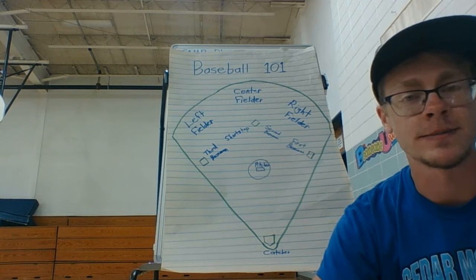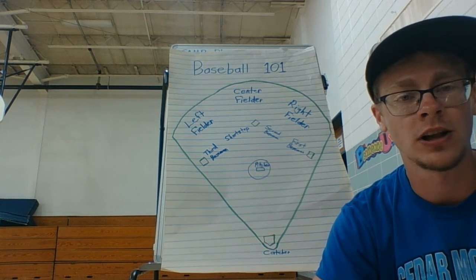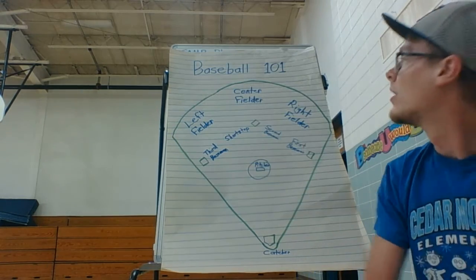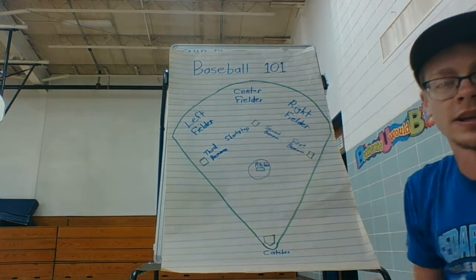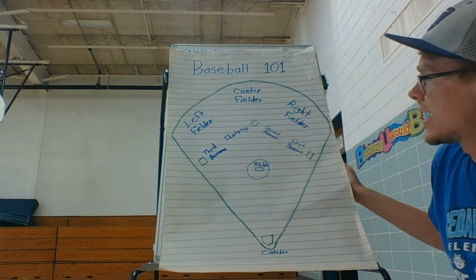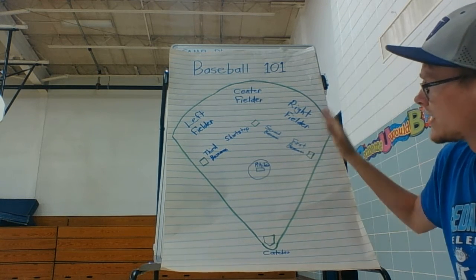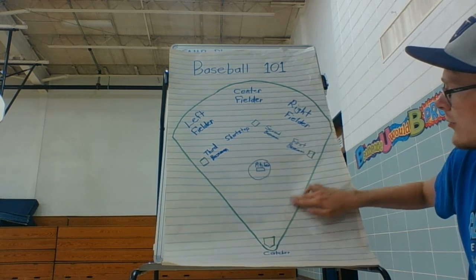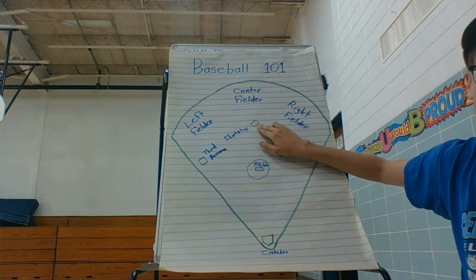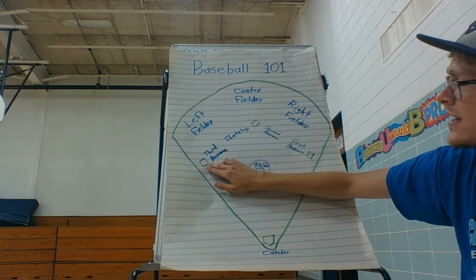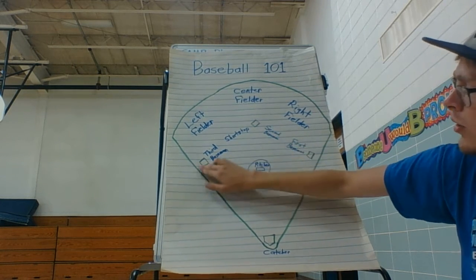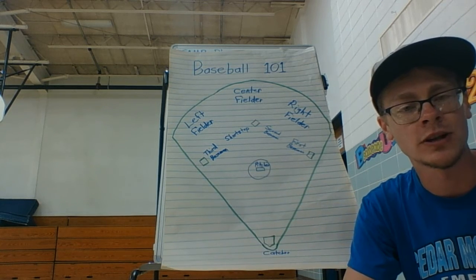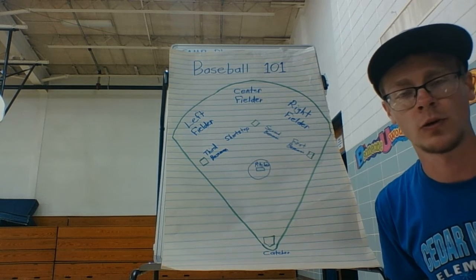What I'm going to do first is just explain the positions of baseball and softball, just in case you guys don't know the correct terms. This is what the baseball diamond would look like — down here is home plate. Once you hit the ball, you run to first base, then second, then third base, and if you're able to go all the way around and return back to home plate, you get a run. The team with the most runs wins, so that's what you want to do. Let's go over the positions real quick.